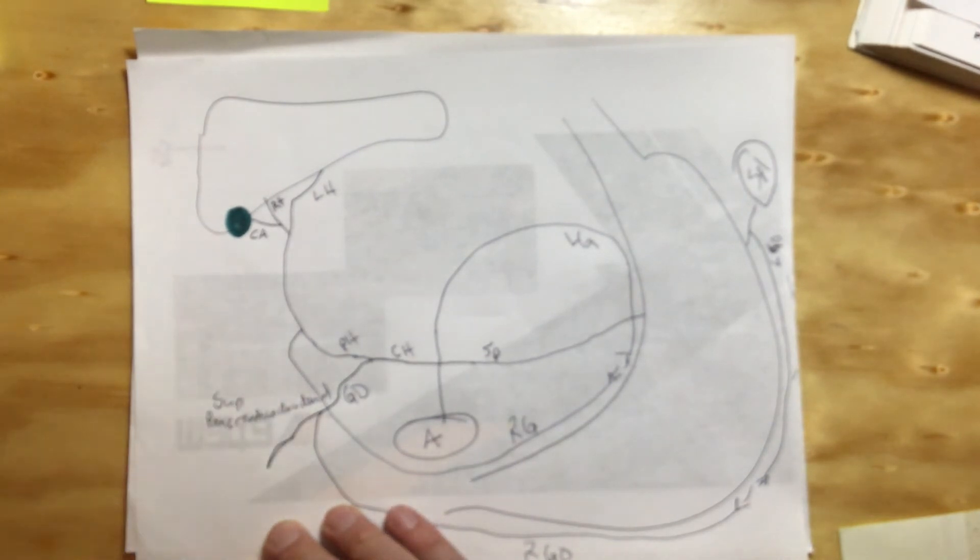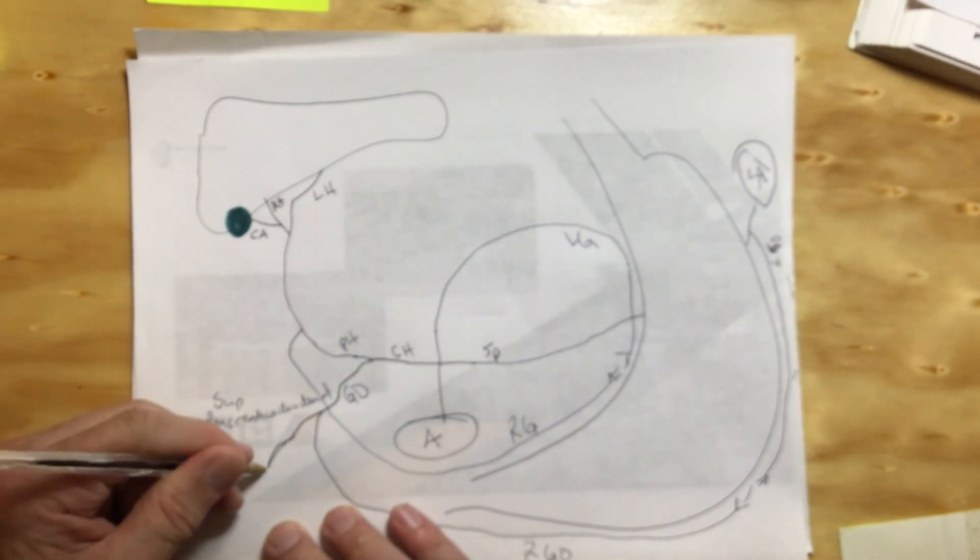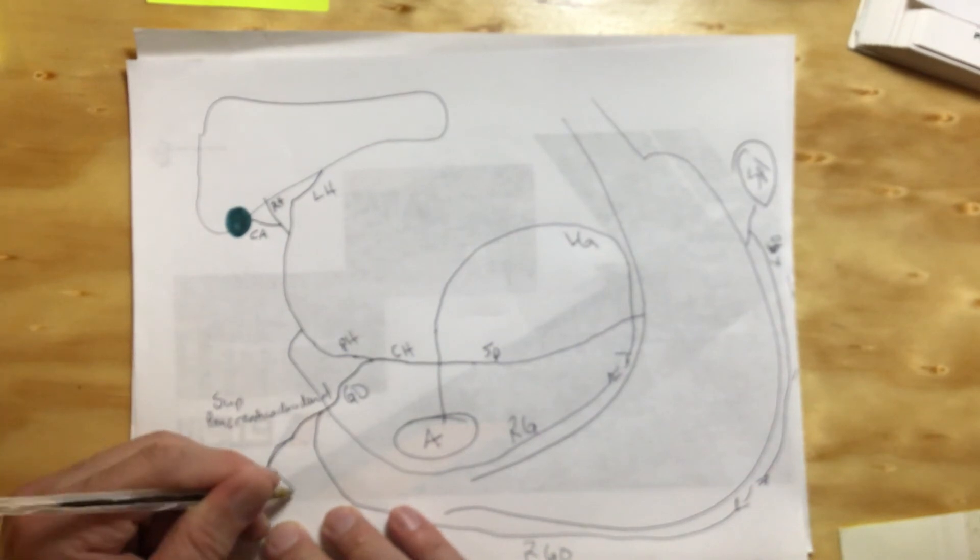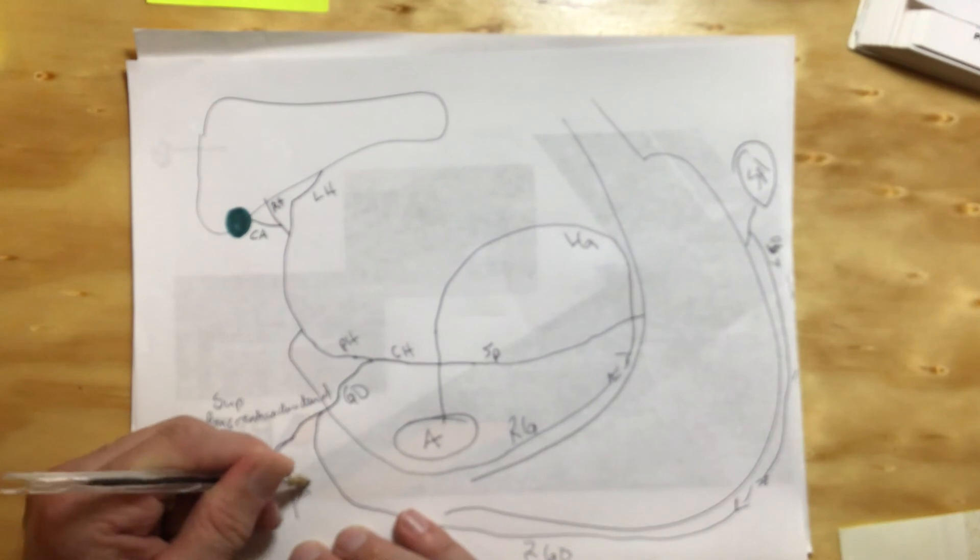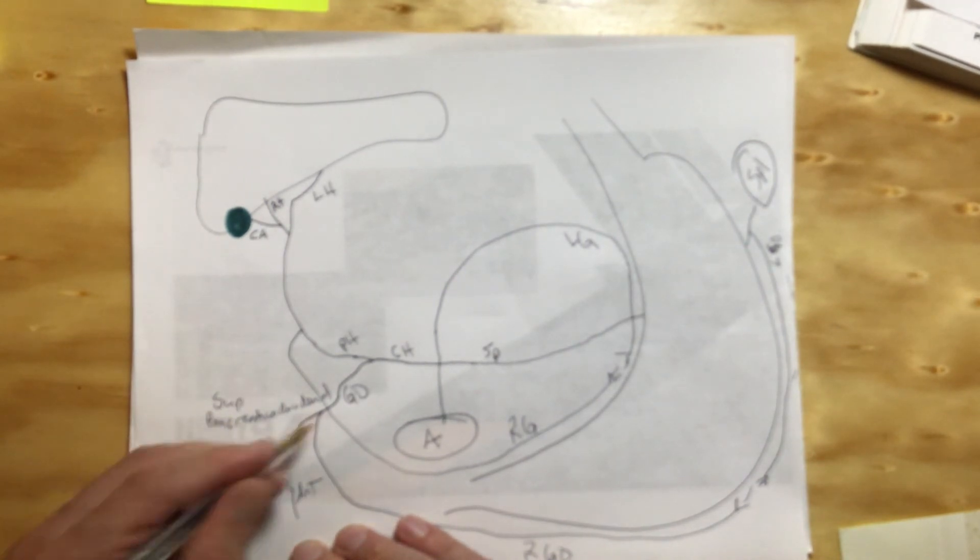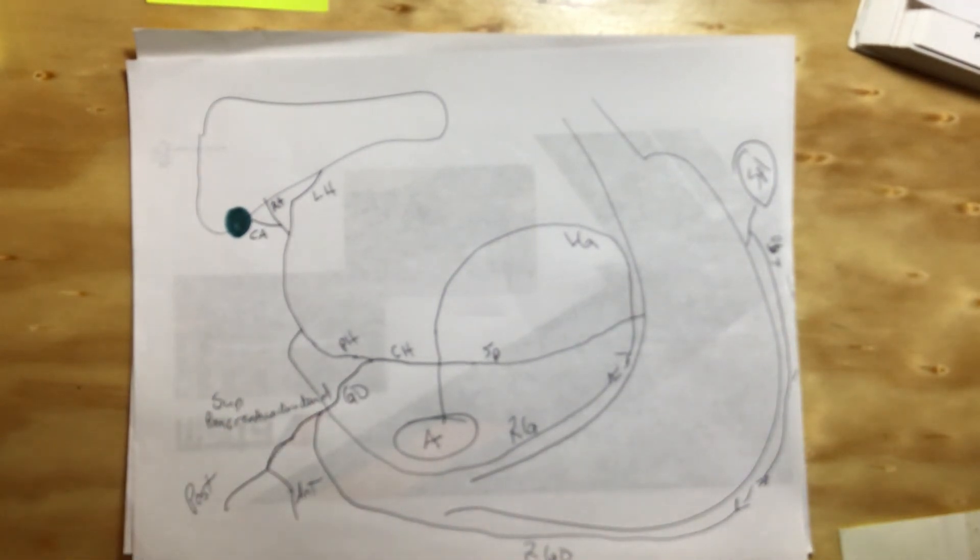That's your superior pancreatic duodenal. But that's not enough because this splits into a posterior and an anterior branch. And I'm not going to write that again, but you're going to say posterior superior pancreatic duodenal and anterior superior pancreatic duodenal. There is some good exercise of our new anatomical language. And they're going to go on opposite sides of the duodenum.